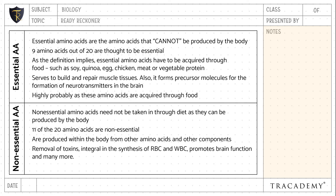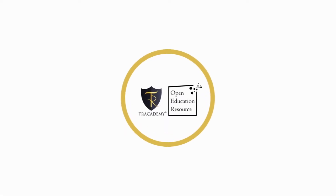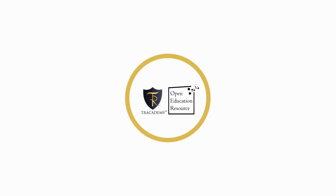A high probability of deficiency is seen with essential amino acids, as these are acquired through food. Whereas the probability of deficiency is rare but can still occur due to starvation or illness with non-essential amino acids.